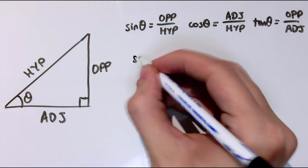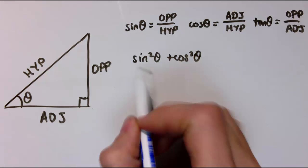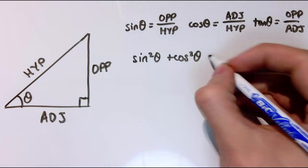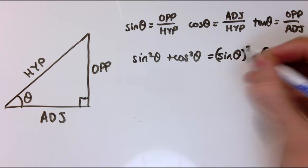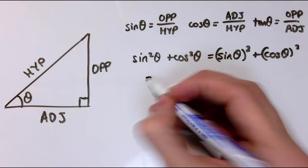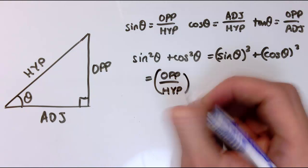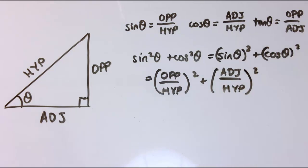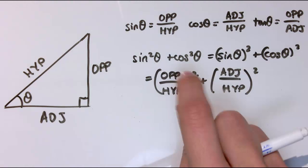Here's the second one. I'm going to look at what happens when I do sine squared theta plus cos squared theta. Sine squared theta means take sine theta and square it — it's just notation for sine theta squared. So I've got the opposite divided by the hypotenuse, squared, plus the adjacent divided by the hypotenuse, squared.